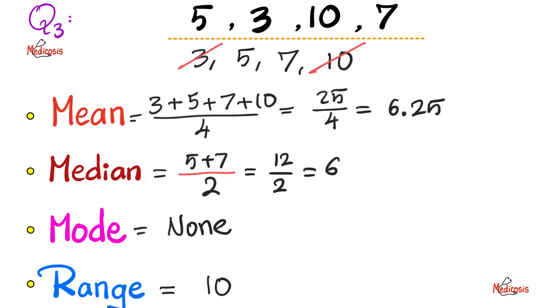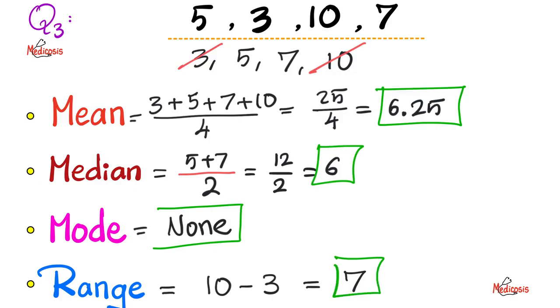And then the range is the greatest minus the smallest. The biggest number is 10. The smallest is 3. 10 minus 3 is 7. So, in a nutshell, the mean is 6.25. The median is 6. The mode does not exist. And the range is 7.